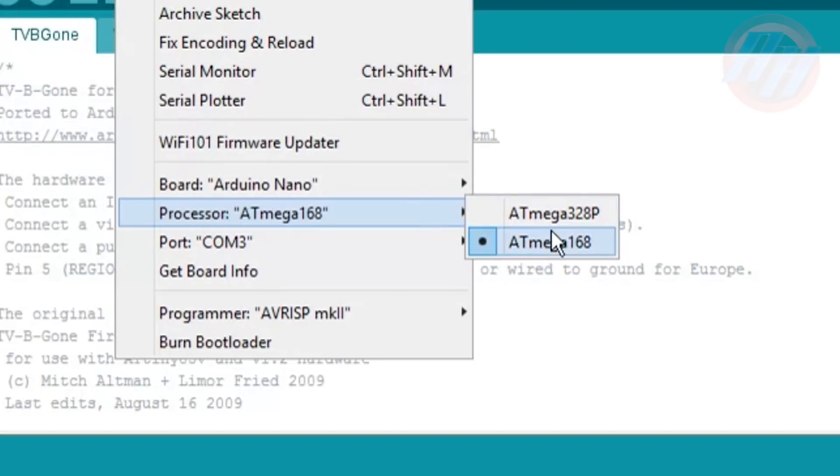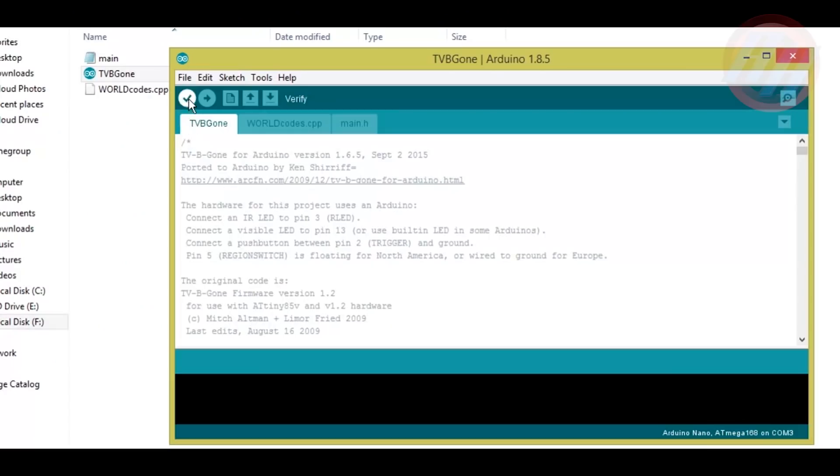Select the desired code you want to upload to the Atmega chip, but before doing that, you set your board. Choose Atmega chip and select USB COM port. After doing this, it's good to verify the code. Then click upload. That's it.